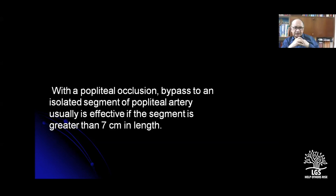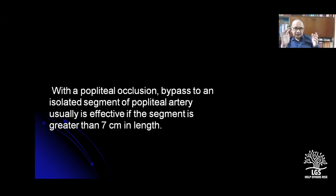The popliteal artery is usually involved in diabetes — the popliteal trifurcation, which has three endpoints: the anterior tibial, posterior tibial, and peroneal arteries. Sometimes there is no outflow at all — only a poor cavity — and an anastomosis must be made with at least seven centimeters of native inflow. Popliteal bypasses work; otherwise, the graft thromboses within weeks.